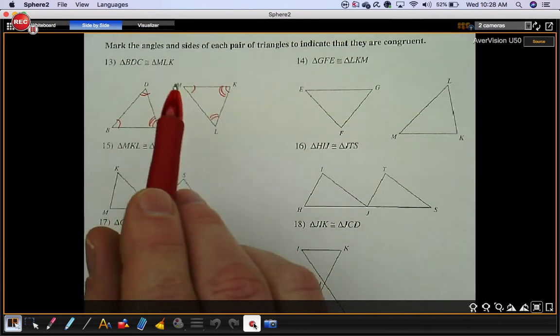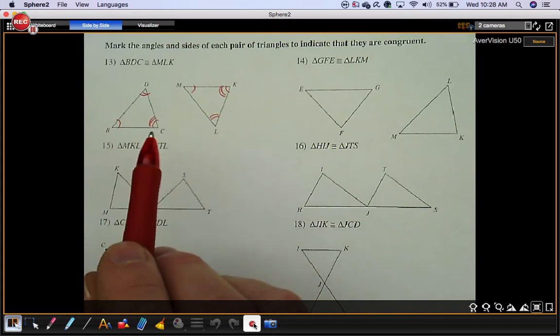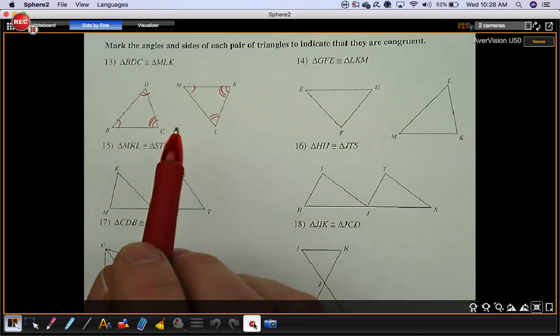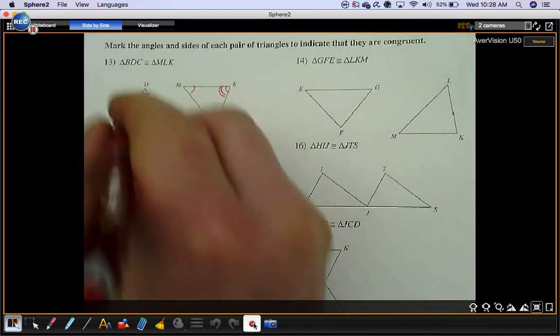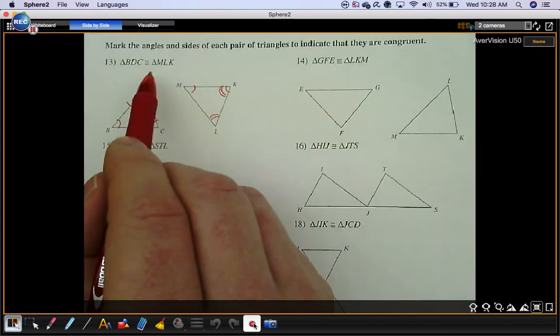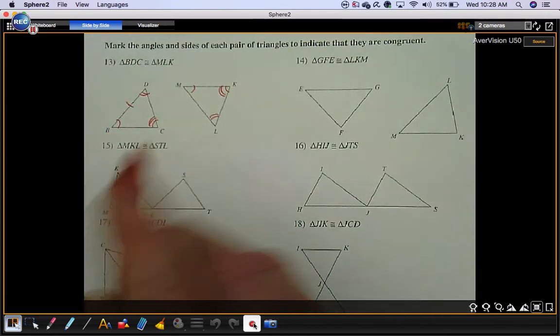Now you also need to mark the three pairs of congruent sides. We already have three pairs of congruent angles. To get to six, you need three pairs of congruent sides as well. Segment BD, I'll put one slash mark on it. Segment BD goes with segment ML.